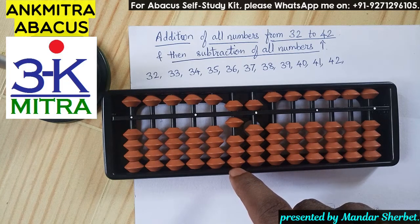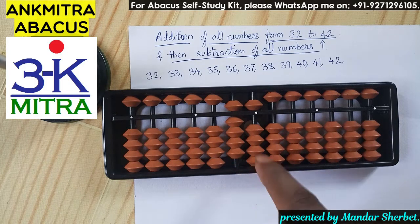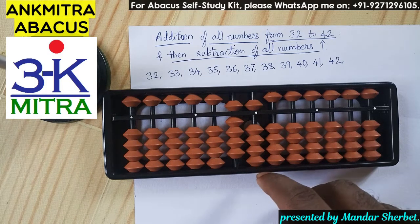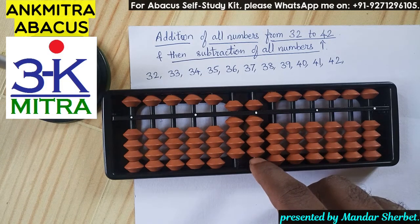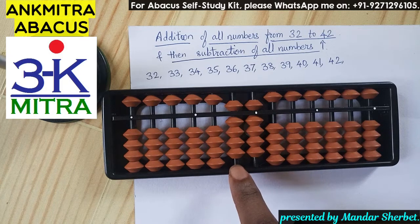Next number is 34. To add 3 on the tens place, I have three beads available so I'll do it directly. To add 4 on the units place, I have four beads available so that can also be done directly. Addition of 34 is done.